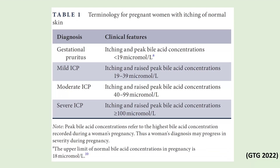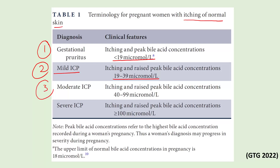Regarding terminology: gestational pruritus is diagnosed when bile acid concentration is less than 19 µmol/L; mild ICP when less than 39 µmol/L; moderate ICP when less than 40 µmol/L; and severe ICP when bile acid concentration is 100 µmol/L or more.